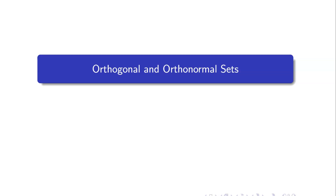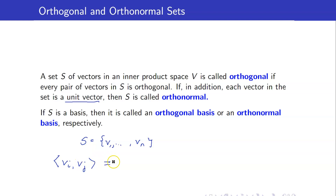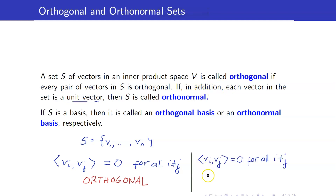In this lesson, I am going to discuss orthogonal and orthonormal sets. Suppose that we have a set of vectors in an inner product space V, and every pair of vectors is orthogonal — meaning if I get any two distinct vectors and compute their inner product, it is always equal to 0. Then we say that the set S is orthogonal. If in addition each vector is a unit vector, so the length of each Vi equals 1, then we say that S is orthonormal.